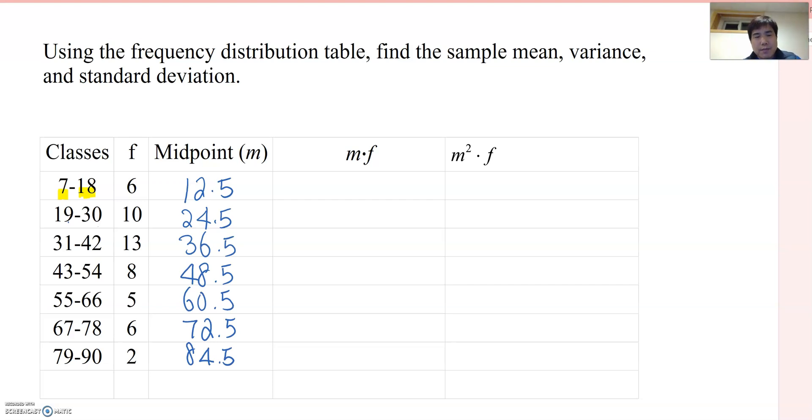So what's next step? Yes, now we are multiplying midpoint times frequency. So let's do it. Then what do we get? So the first one is 12.5 times 6, then you got 75.